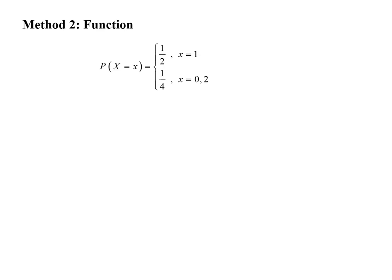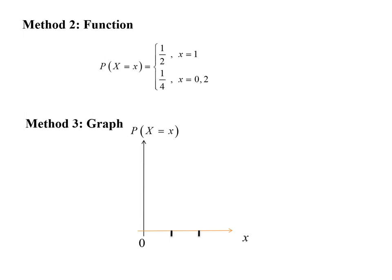We can also represent our answer using a piecewise function. Lastly, we can use a graph to represent the answer. On the x-axis: 0, 1, 2. The probabilities are 1/4 and 1/2. We use vertical lines to show the answer.